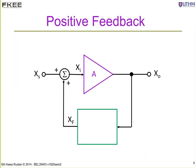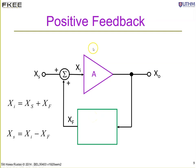This is the block diagram of a positive feedback system. The output of the amplifier is x_out, the input to the amplifier is x_i, the source is x_s, and the feedback signal is x_f with gain beta. For an oscillator using positive feedback, there is no external source — only the closed loop is needed.